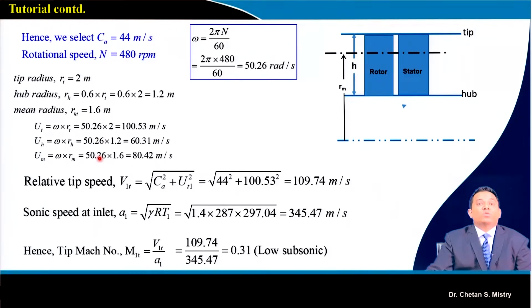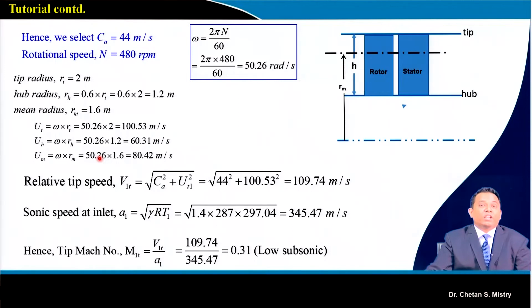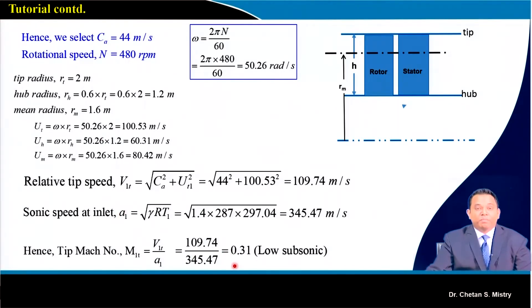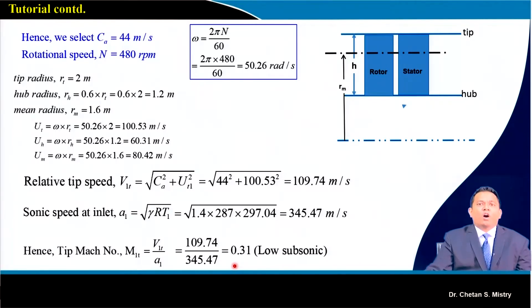We need to check whether flow near the tip is high subsonic or transonic. Calculating the tip Mach number with these parameters, it comes to 0.31 — this is a low subsonic configuration. All radii and axial velocity are now fixed.